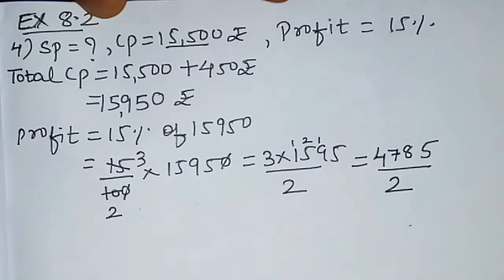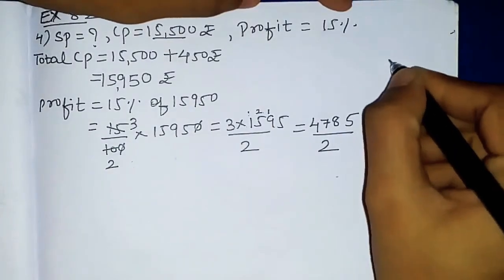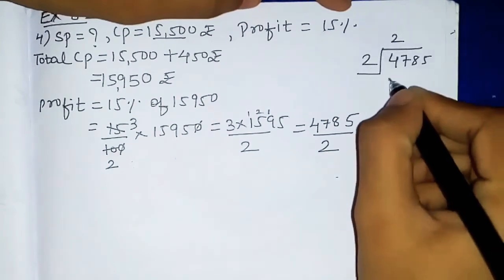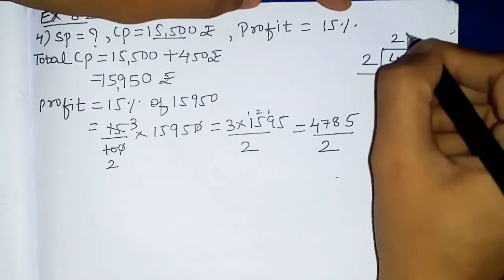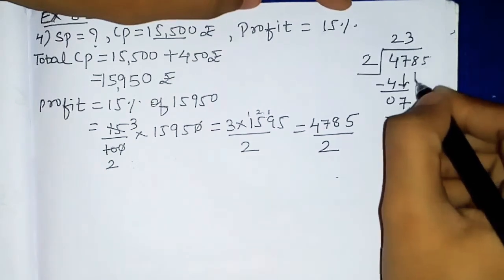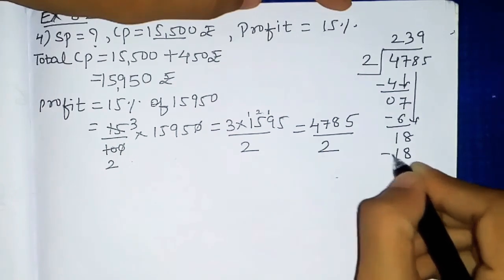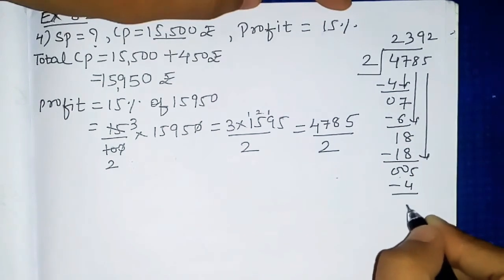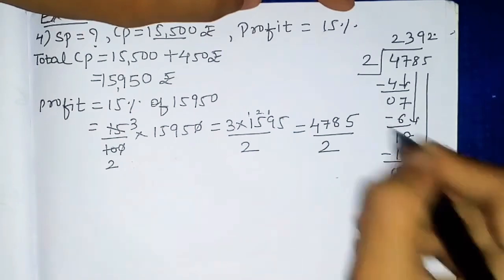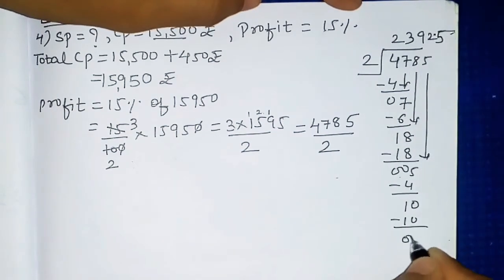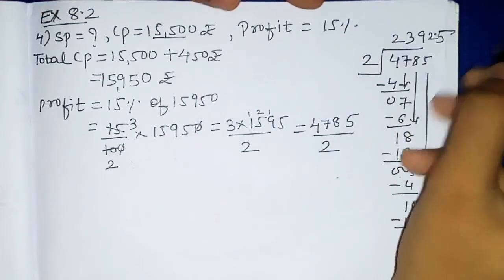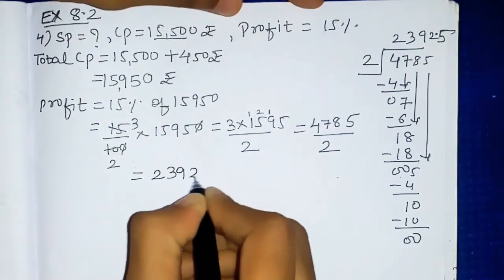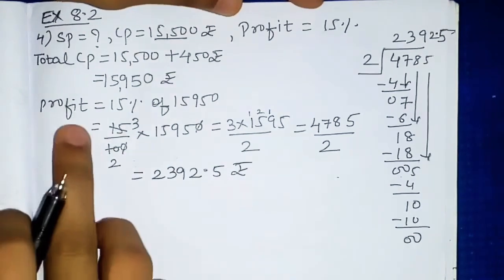Dividing 4785 by 2: 4 ÷ 2 is 2; bring down 7 — 6 goes in, remainder 1; bring down 8 — 18 ÷ 2 is 9; bring down 5 — 4 ÷ 2 is 2, remainder 1; giving 0.5. So 4785 ÷ 2 equals 2392.5. So the profit is ₹2392.5.